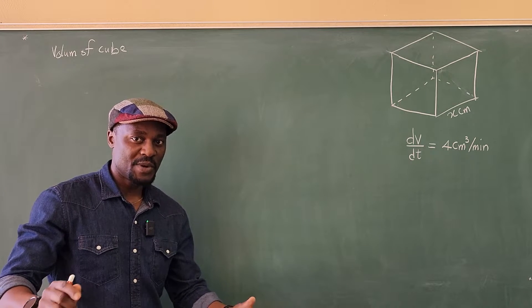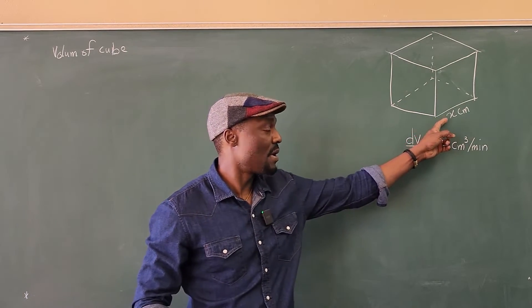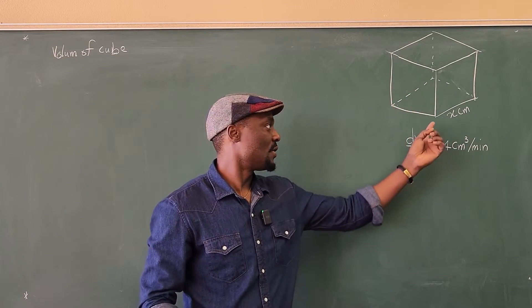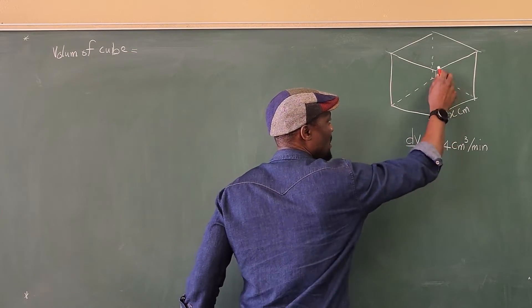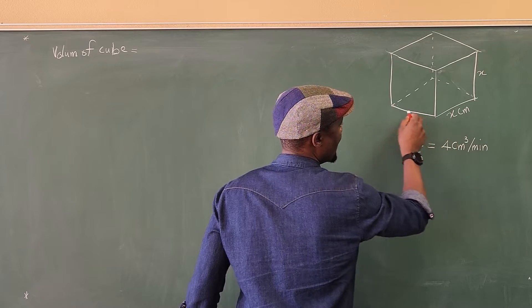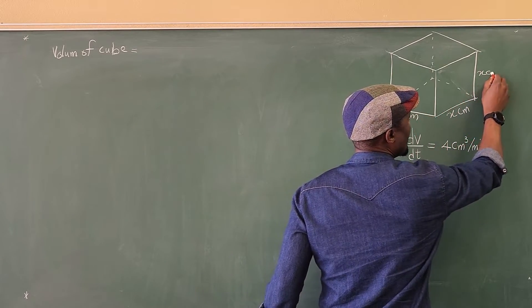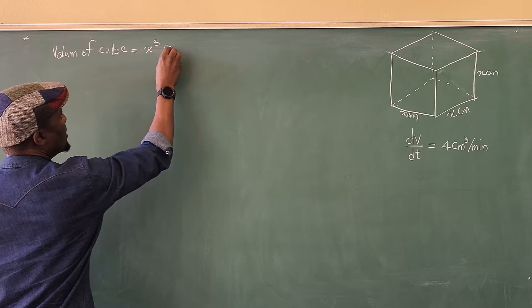So the first thing you need to do is compute the volume of a cube. We don't know what the sides are, so I just represented the side. Because it's a cube, all the sides are the same. So the volume of a cube is x cubed. It's going to be length times width times height. This is also x, and this is also x. So everything is x centimeters. So this is going to be x cubed centimeters cubed.